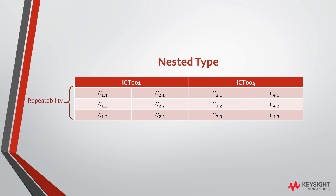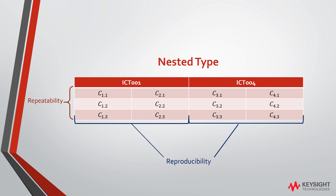ICT001 has measured both Component 1 and Component 2 to check if the variability between Component 1 and Component 2 is acceptable, which is reproducibility. Notice that for the nested method, a single component can only be tested in one equipment.